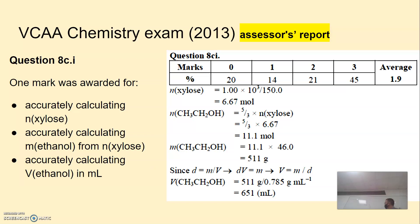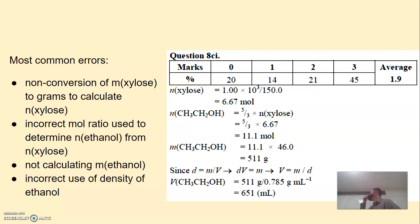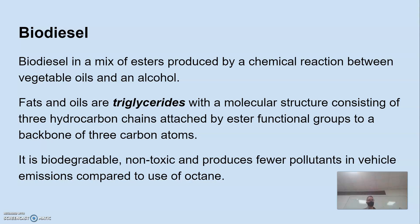The marking scheme awards marks for: accurately calculating moles of xylose including unit conversion; accurately calculating mass of ethanol using the correct mole ratio; and correctly calculating volume using density. Common mistakes include not converting kg to g, using an incorrect mole ratio, skipping the mass step, and multiplying rather than dividing by density. Results: 45% scored three marks, 21% two marks, 14% one mark, and 20% scored zero.